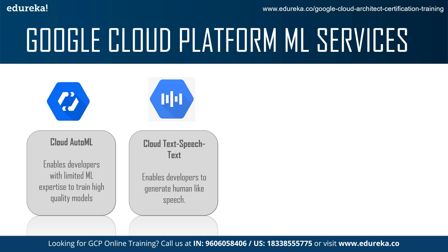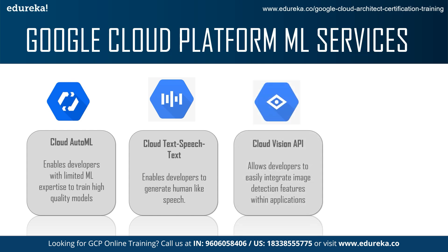For a certain given text you will get a voice output, or for a certain voice input you'll get text. That is what Google Text-to-Speech does. Next up we have the Cloud Vision API, which allows developers to easily integrate image detection features within applications. For example, optical character recognition helps you detect text in images — if there is an image that says 'No Parking', Cloud Vision will detect that text due to its optical character recognition capabilities.